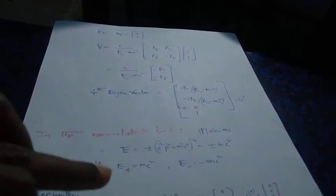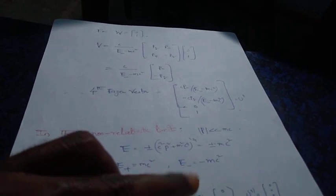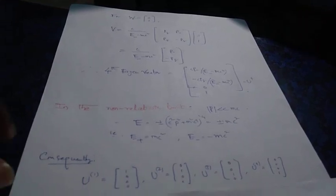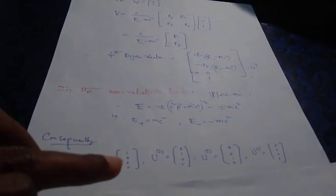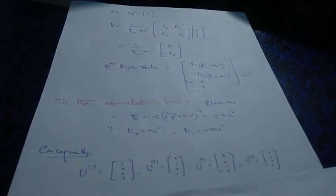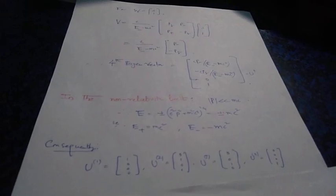In the non-relativistic limit, momentum P is very small compared to mc, so E tends to ±mc². Thus E+ = mc² and E- = -mc². As P goes to zero, the column matrices U¹, U², U³, and U⁴ become (1, 0, 0, 0), (0, 1, 0, 0), (0, 0, 1, 0), and (0, 0, 0, 1) respectively. That is it for this video, thanks for watching.